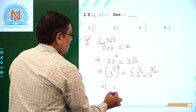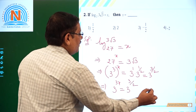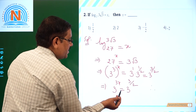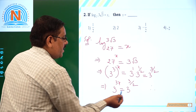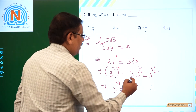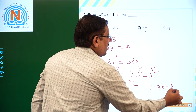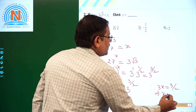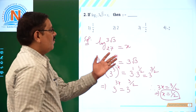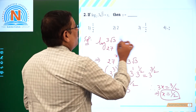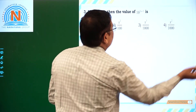That implies 3 to the power 3x is equal to 3 to the power 3/2. Since the bases are equal, we can equate the exponents: 3x equals 3/2, therefore x is equal to 1/2. The value of x is 1/2.